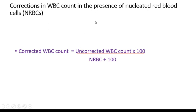Corrections in WBC count in the presence of nucleated red blood cells. When nucleated red blood cells are present, they will be included in the total WBC count. If they are present in significant numbers, the total nucleated cell count should be corrected to obtain the true total WBC count. Count 100 white cells and count all the NRBCs while counting those 100 white cells. The corrected WBC count equals uncorrected WBC count multiplied by 100 divided by NRBC plus 100.